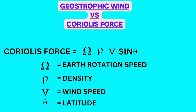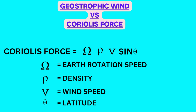Geostrophic wind versus Coriolis force: the formula for Coriolis force is as shown on the screen. It is important to remember this formula since it can help you in answering questions related to the effect of latitude and density on wind speed. From this formula, it is evident that for a given value of Coriolis force, wind speed will increase if the latitude is lesser — that is, near the equator — and if the density is less — that is, at higher altitude.